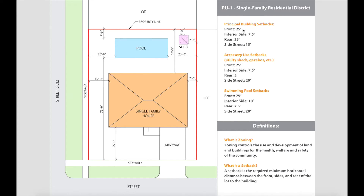Principal building setbacks — front: 25 feet. Keep in mind that all these setbacks are minimum distances, so being over is completely fine. Looking at the house, from the property line to the house there's 25 feet, so that's good. Interior side: 7.5 feet. This is the interior side because there's a lot right next to it, and this measures 7.5 feet — good to go.